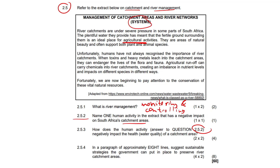Question 2.5.3: how does that human activity — your answer from 2.5.2 — negatively impact the health or water quality of a catchment area? We need to give two well-explained points. First, it causes a reduction in oxygen levels. The fancy term for this is eutrophication — if you knew that word, the examiners marking your paper are going to be very impressed.